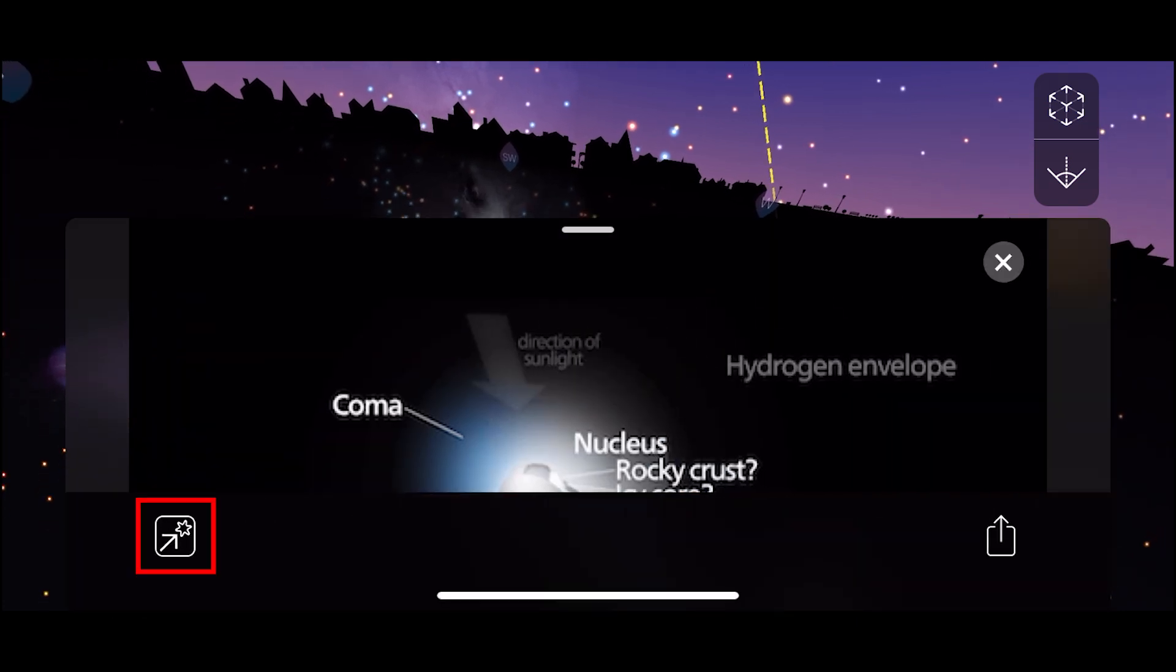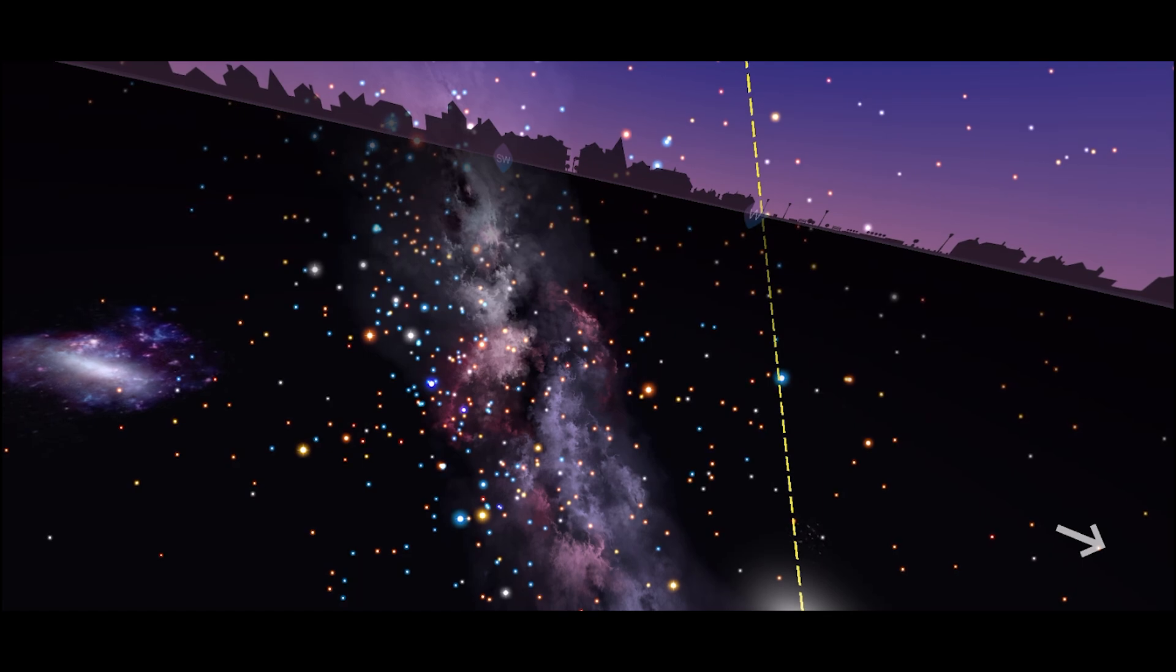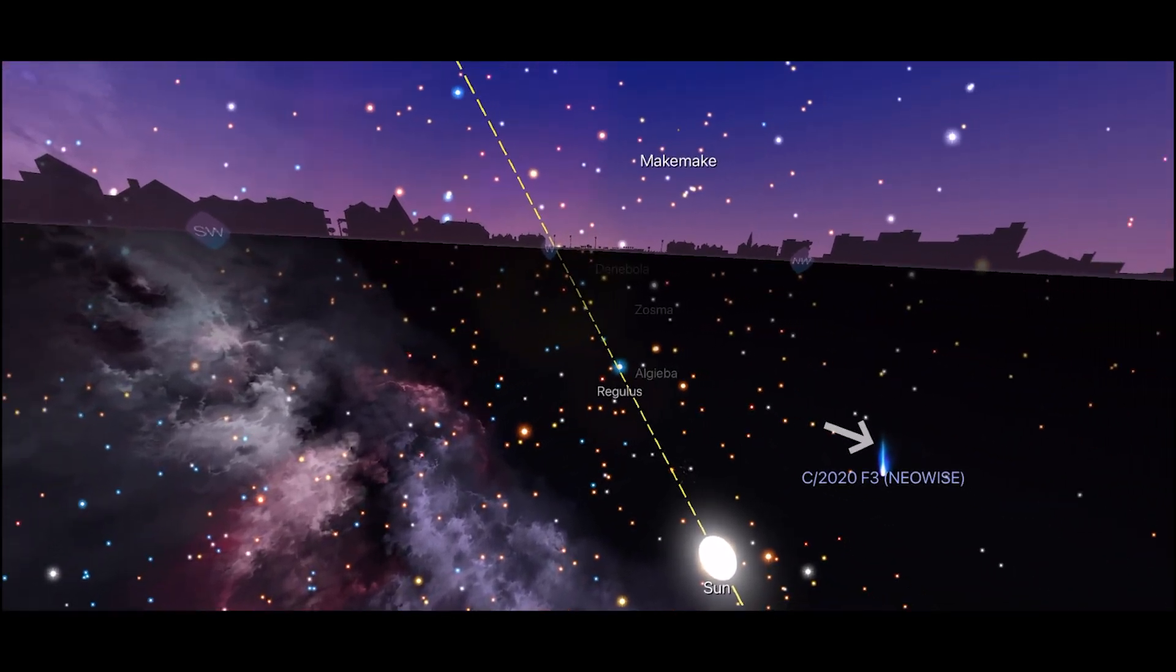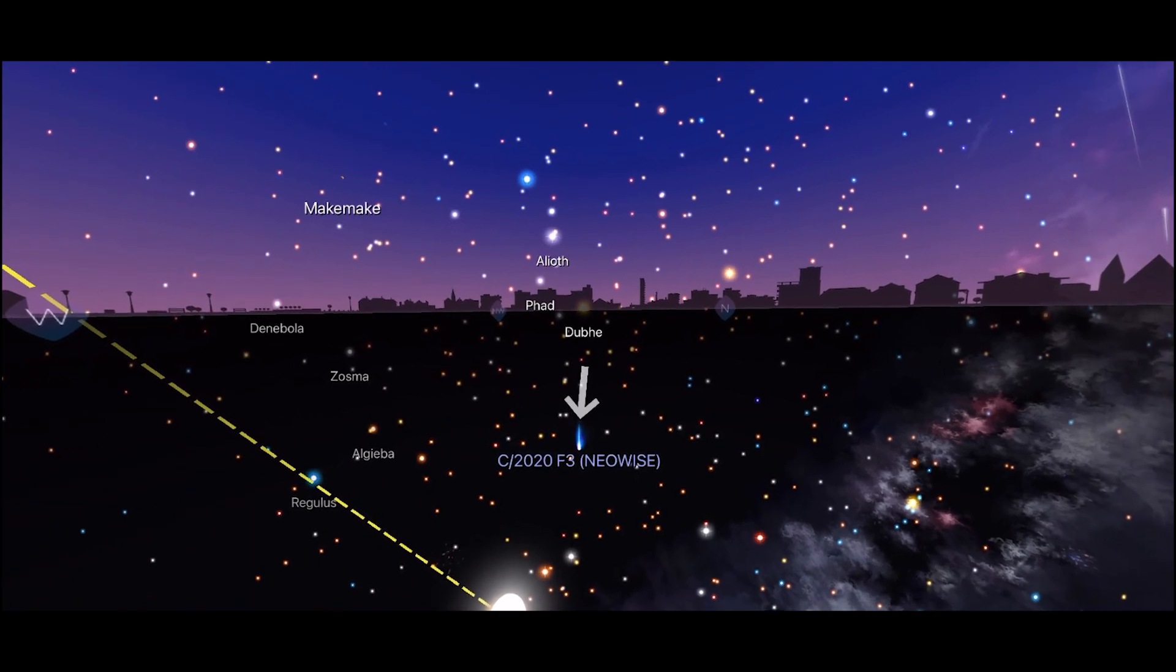Now click the arrow icon on the bottom left corner. This will place an arrow on your screen pointing to exactly where the comet is in your field of view. All you gotta do is follow the arrow and voila, there is Comet NEOWISE.